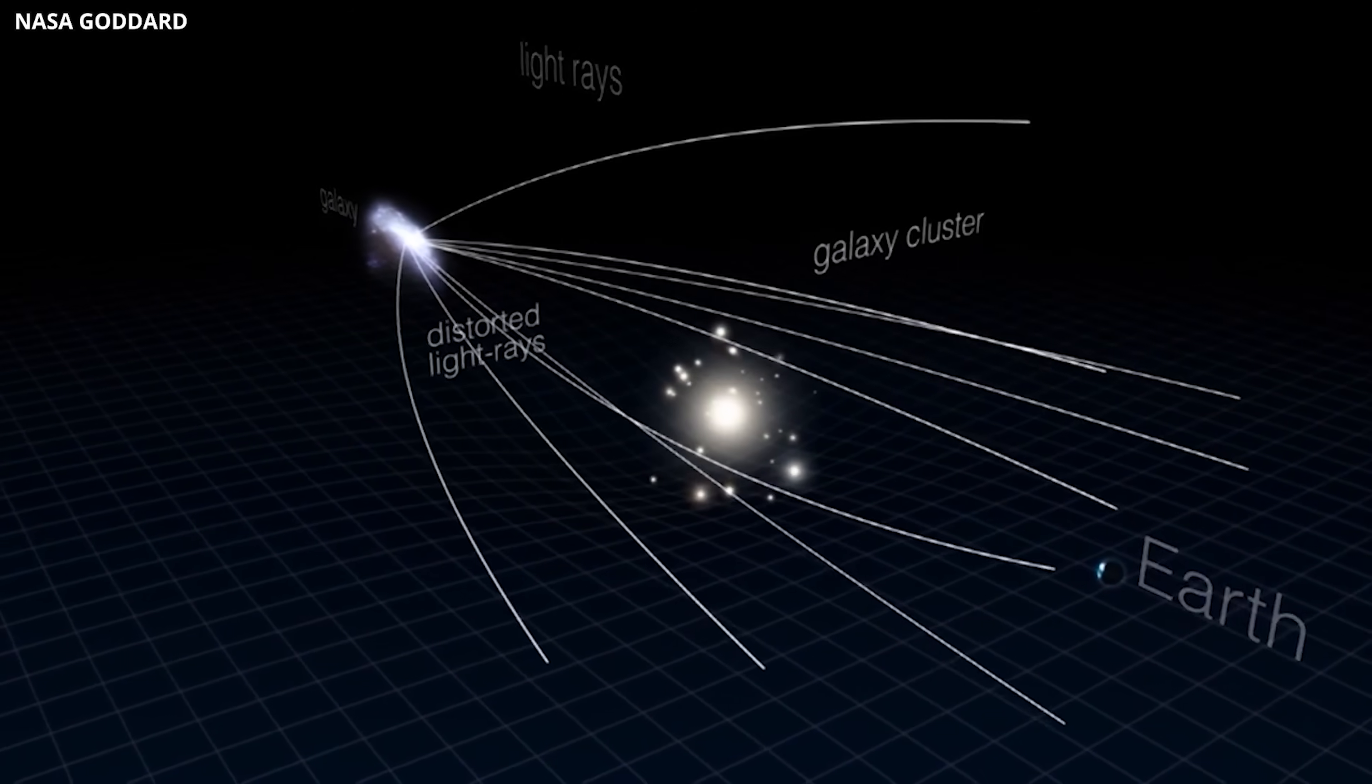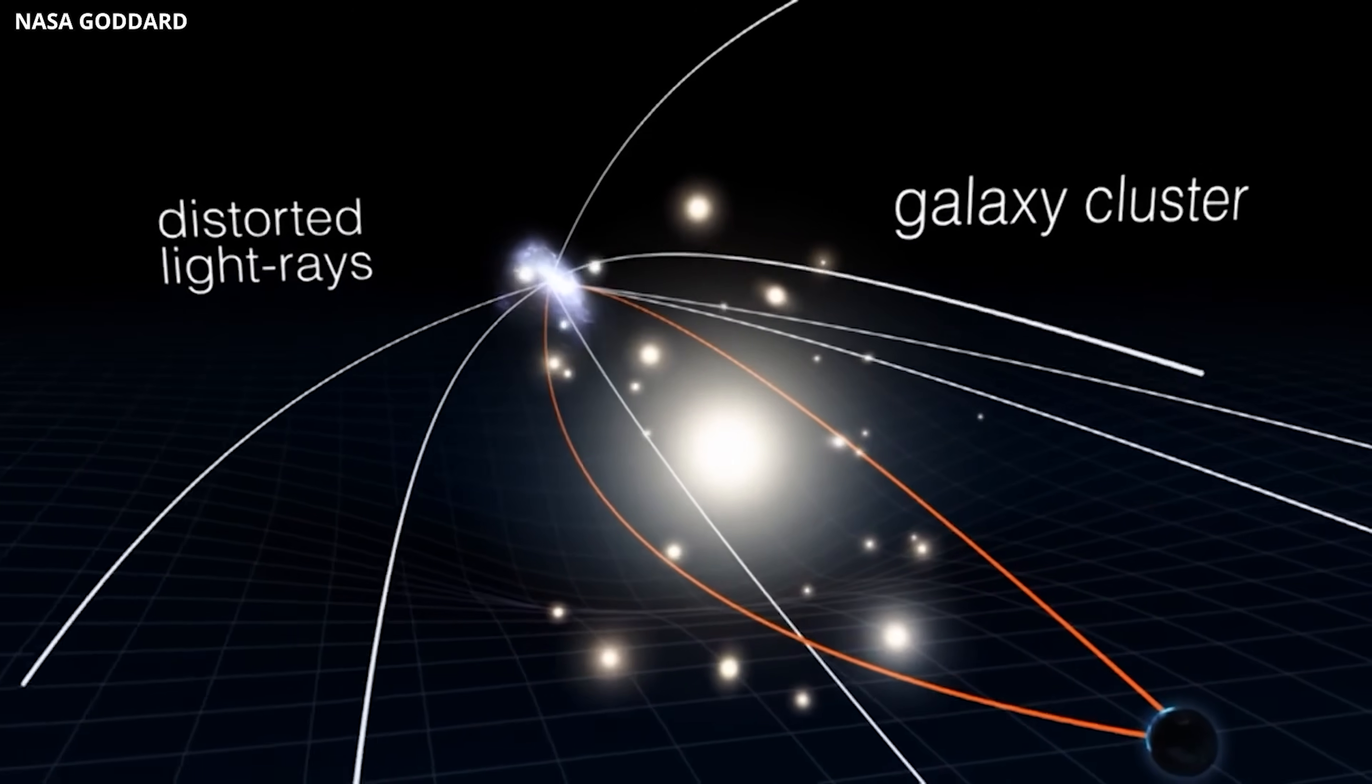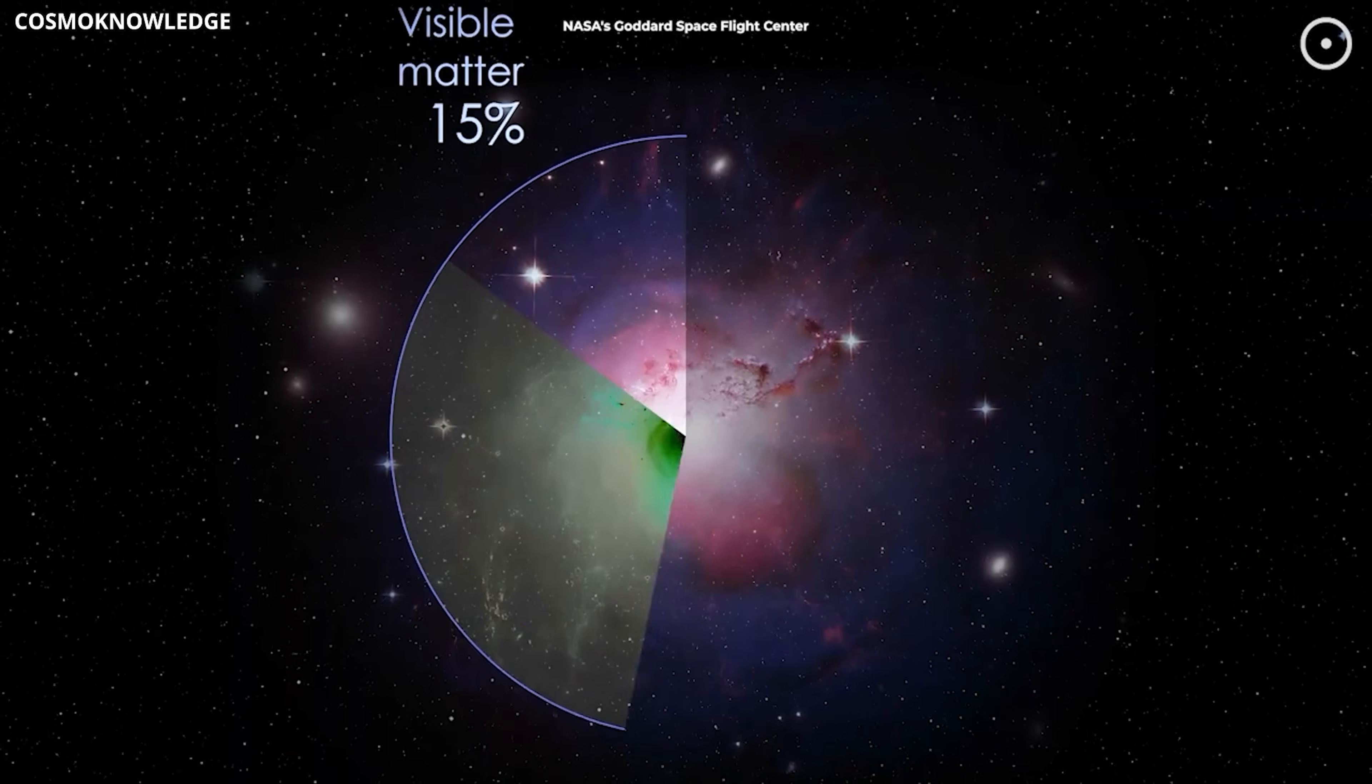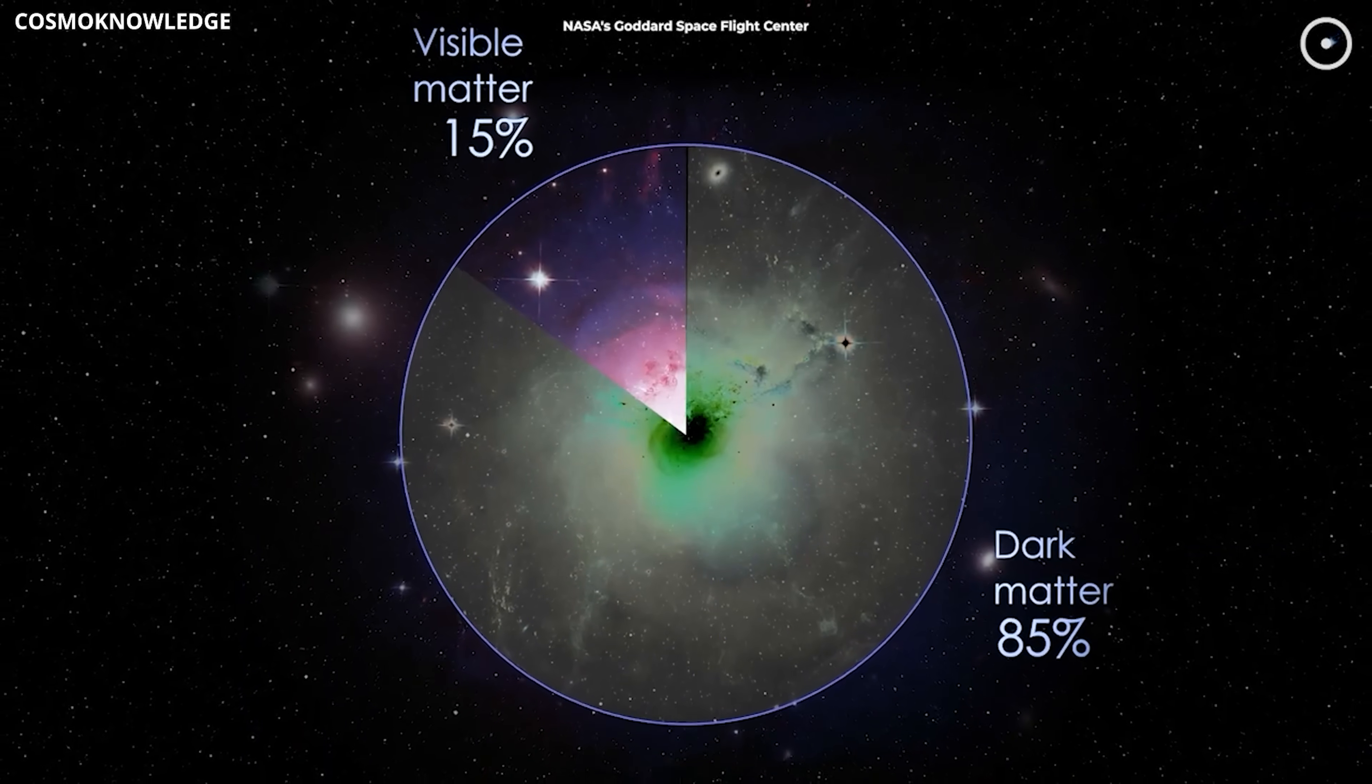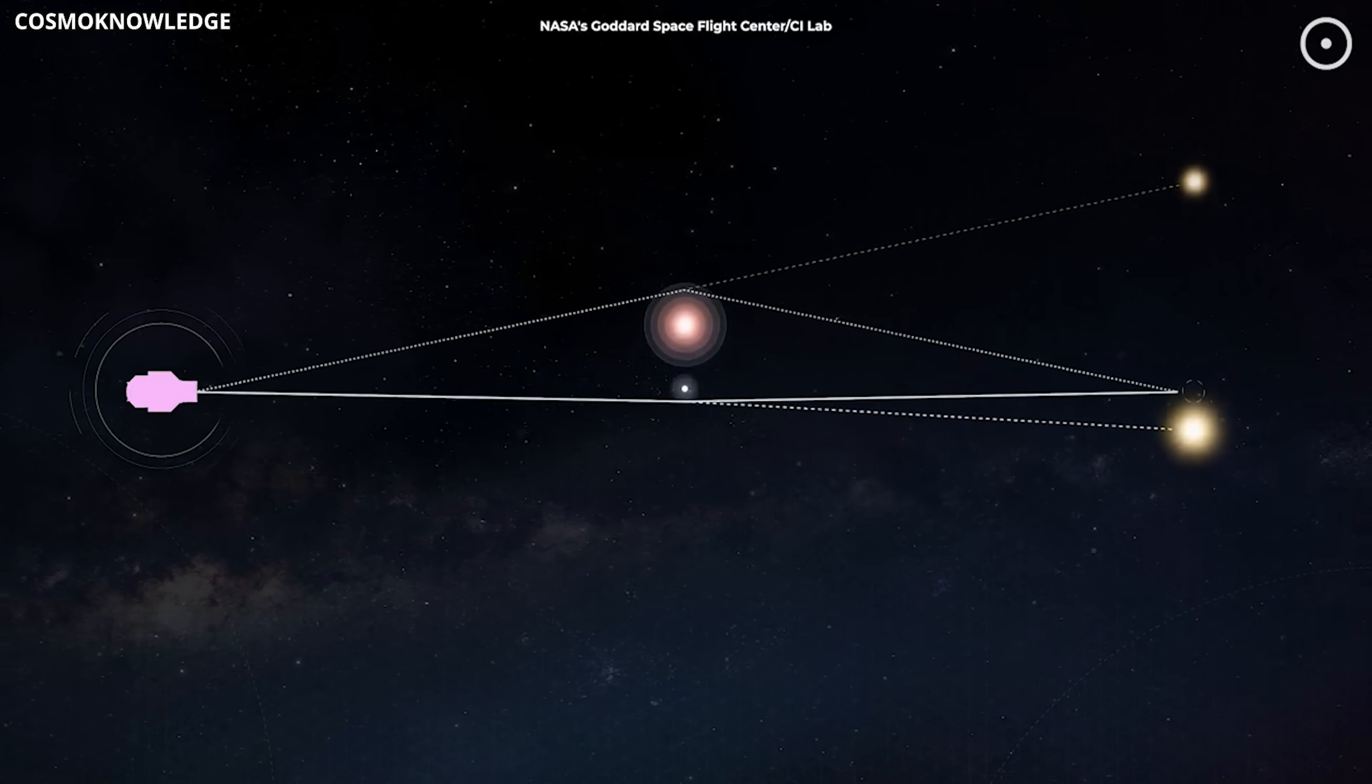This discovery is profound because it offers direct evidence of dark matter's influence on the scale of a galaxy group. While astronomers know that dark matter constitutes most of the universe's mass, its distribution in smaller structures is much harder to measure.